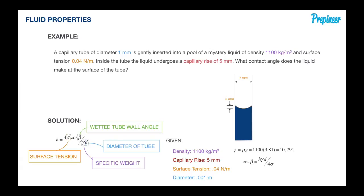We're going to rearrange our equation to isolate beta because we're looking for that contact angle that the liquid is making. Our last step is to take the inverse cosine of that equation we formulated.